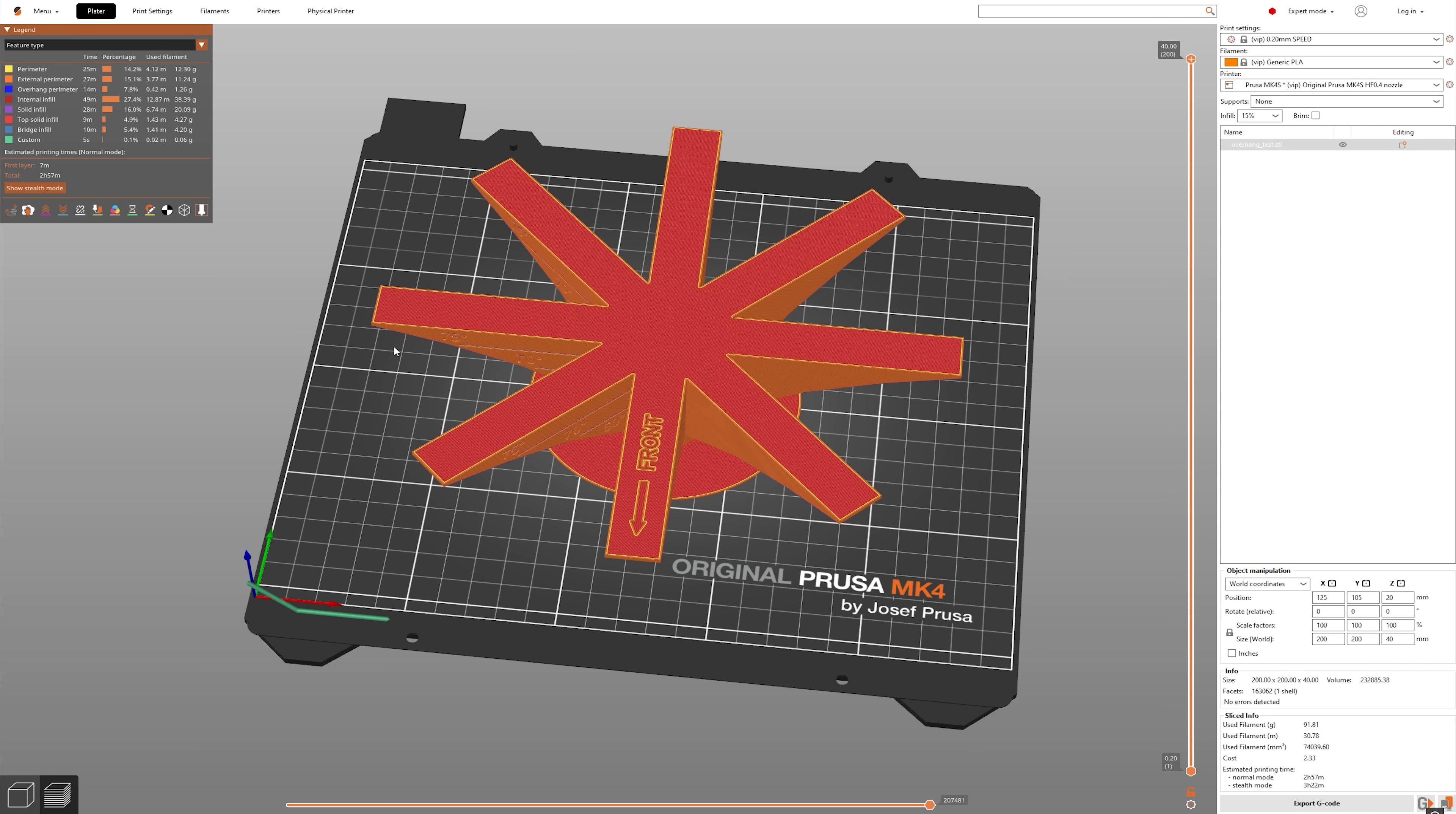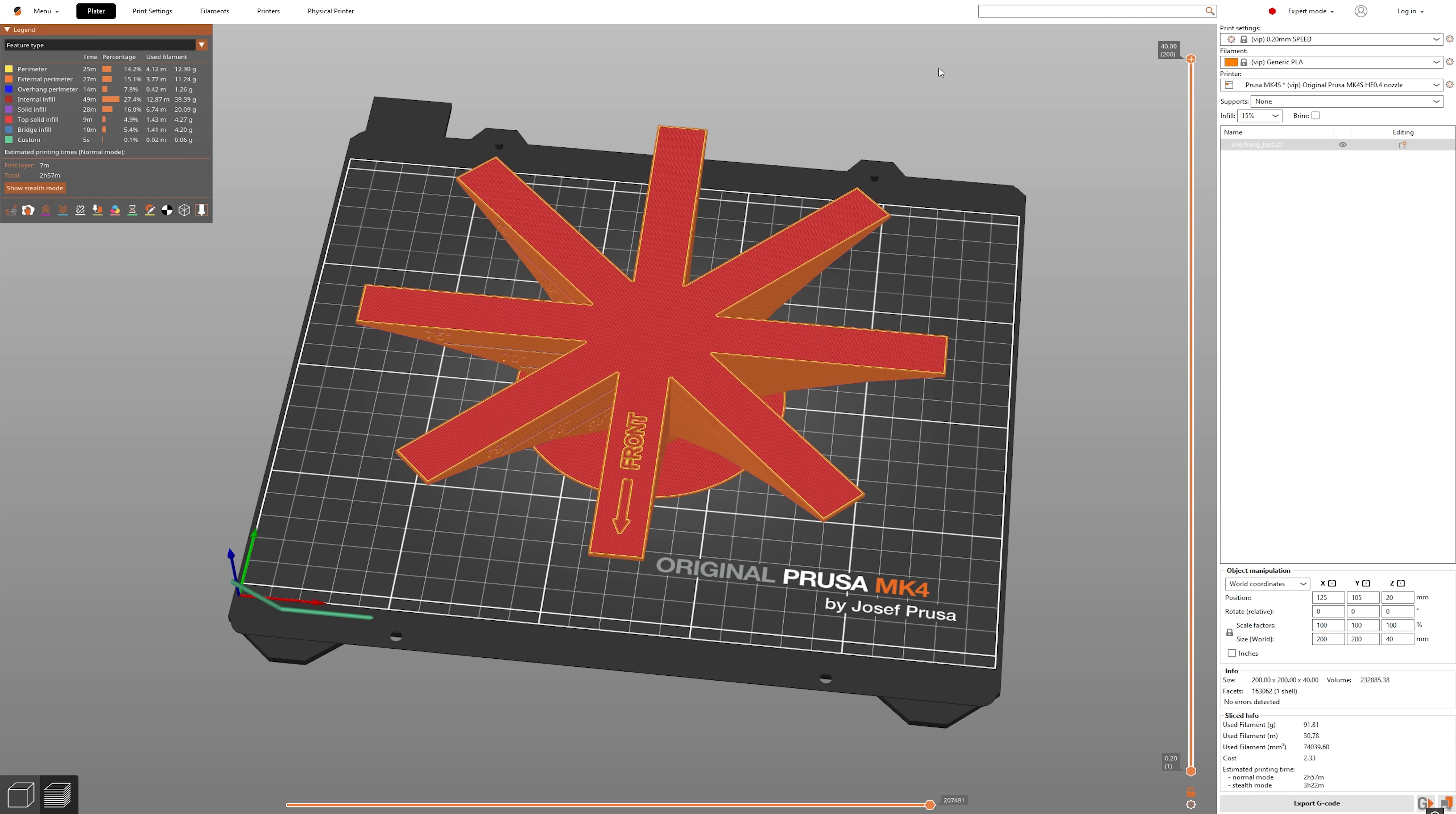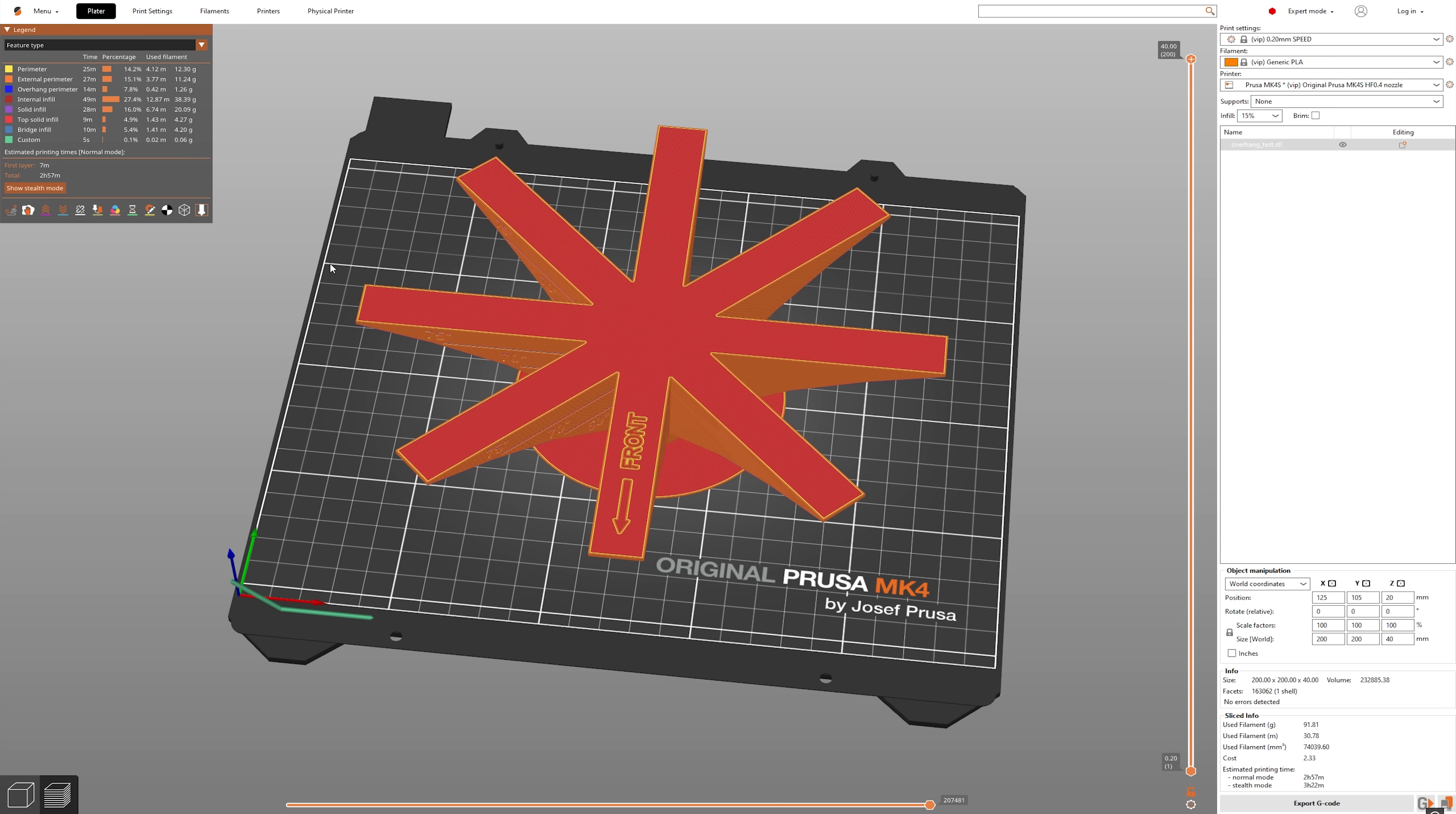As you can see, I have the overhang test model loaded into Prusa Slicer, the same model loaded into Bamboo Studio, as well as Orca Slicer. And they're all pretty similar. I'm using generic PLA as a profile, 0.2 millimeter layer height. For the Prusa, we're looking at just under three hours. For the Bamboo, about two hours 45 minutes, and Orca Slicer about 2:45. So they're all very similar. But let's look at the individual layers and we can start seeing some differences between them.